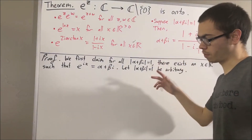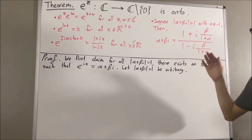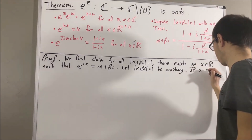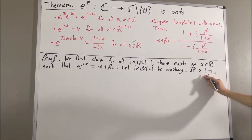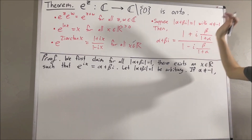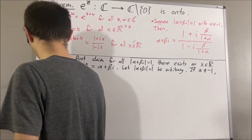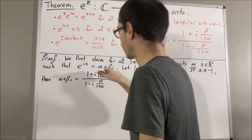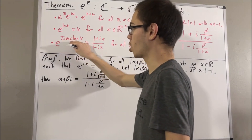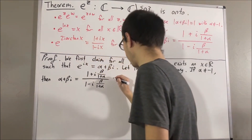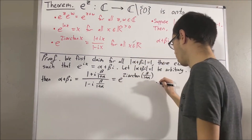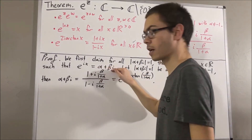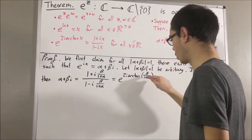To show that, we split into two cases: either alpha equals -1, or alpha is not equal to -1. Let's first consider the case alpha ≠ -1. If alpha is not equal to -1, then by the fact about magnitude-1 complex numbers, alpha + beta·i can be re-expressed, and by our third fact this equals e^{2i·arctan(beta/(1+alpha))}. So we have found a real number x: just take x to be 2 times the arctangent of beta/(1+alpha).